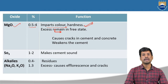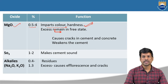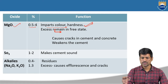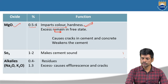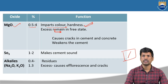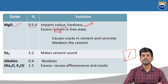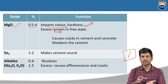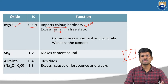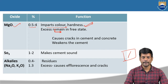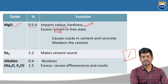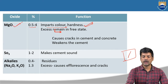Hardness is nothing but resistance to scratching or indentation. When you try to scratch a particular material, it is not going to get the scratch — it is going to resist. That resistance will be measured by using this particular hardness. Due to addition of this particular magnesium oxide, the hardness will be affected.